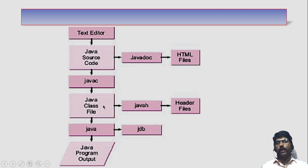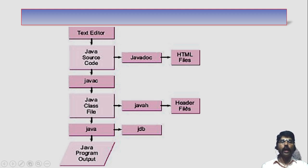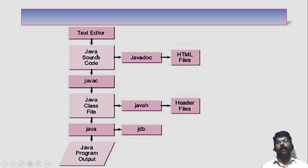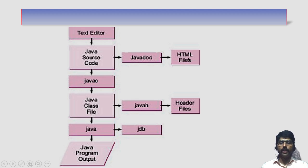If the Java class file needs some native functions — if we have to access functions from C or C++ — then we need JavaH. This tool will create some header files for our Java code. If you want to create help files or documentation files, JavaDoc can convert the source code into HTML files. The documentation section written in Java source code can be converted into HTML files.